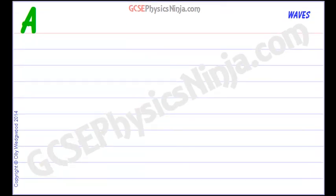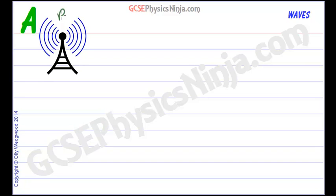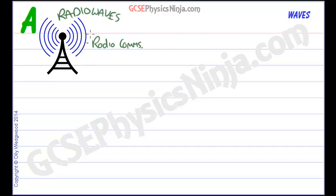Let's start with radio waves and check out some uses. Radio waves, as the name suggests, are used in radio communications. The wide range of wavelengths are used for different purposes. For example, long wave can diffract around the Earth's surface and reach hundreds of kilometres, whereas shorter wavelengths can be used for television communication as well.